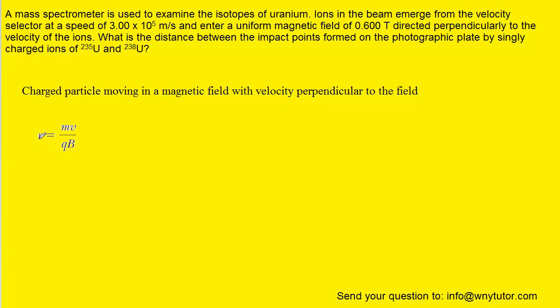Now, in this equation, R represents the radius of the circular path that the charged particles are following. M is the mass, V is the speed of the charge, Q is the charge itself, and then B is the strength of the magnetic field.